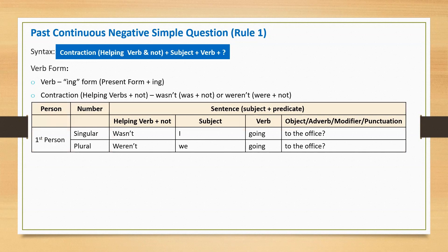First person singular: Wasn't I going to the office? This sentence begins with contraction 'wasn't', followed by subject 'I', main verb 'going', and ends with a question mark.